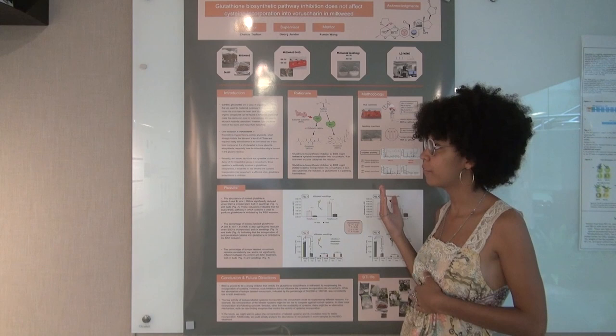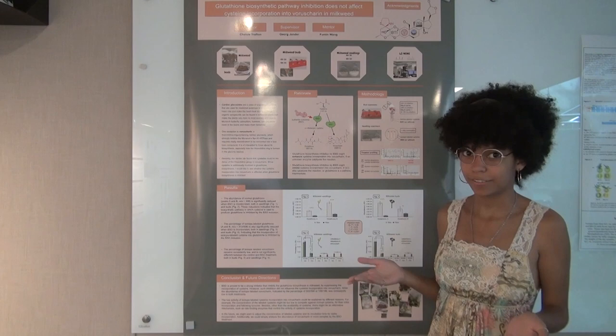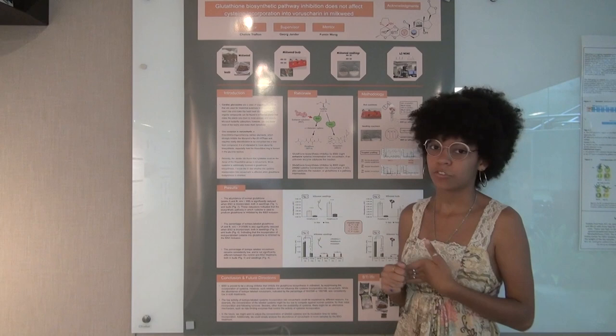Recently, the Jander lab found that monarch butterflies can process most cardiac glycosides and make them beneficial. Then the butterfly is toxic to its prey and the prey is less eager to eat the monarch butterfly caterpillar.